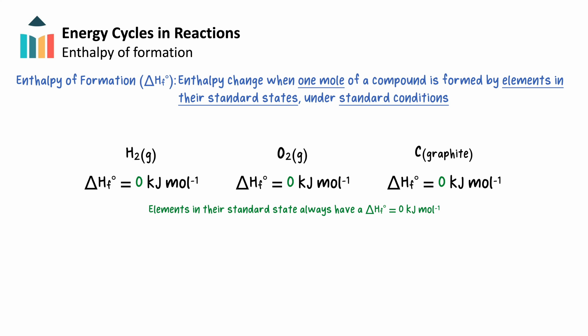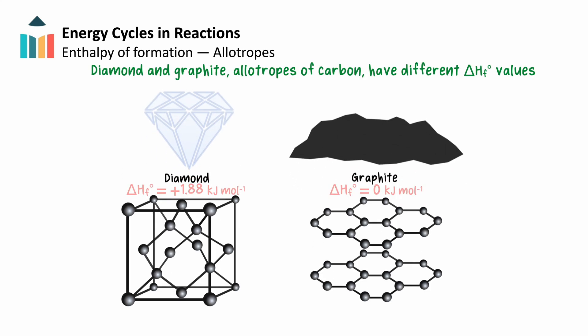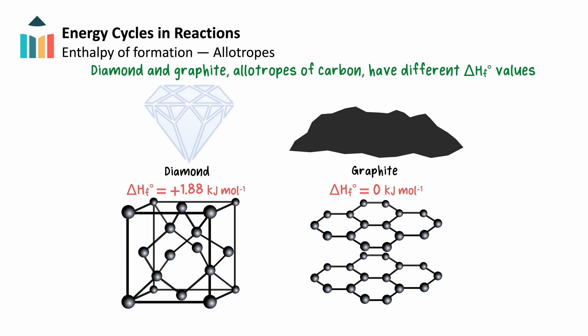What about elements that exist in different forms, like carbon? Graphite and diamond, two allotropes of carbon, have different enthalpy of formation values due to their distinct structures. Graphite, the most stable form of carbon under standard conditions, has an enthalpy of formation of 0 kJ per mole and acts as the reference state for carbon. Diamond, on the other hand, has an enthalpy of formation of 1.88 kJ per mole, reflecting the additional energy required to convert carbon atoms into diamond's highly ordered lattice structure. This energy difference is why diamond is less thermodynamically stable than graphite, even though diamond is more durable due to its strong covalent bonding.